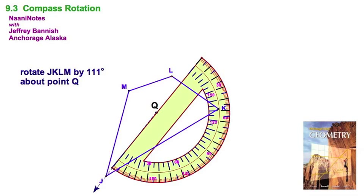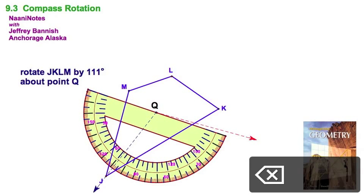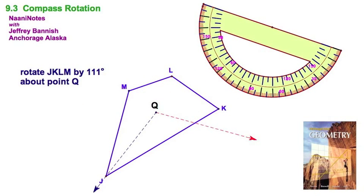That's lined up with your ray. And again, you got your vertex lined up with Q. You find 90, 100, 110, and then maybe a wee bit more. Go to the outside scale to get that extra degree. You can line up with your straight edge.